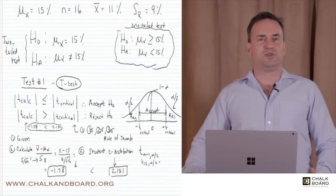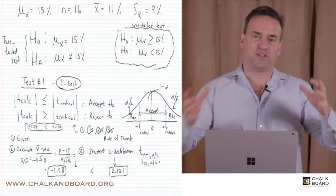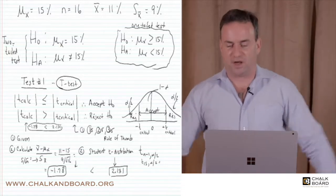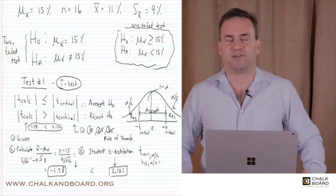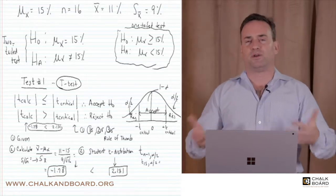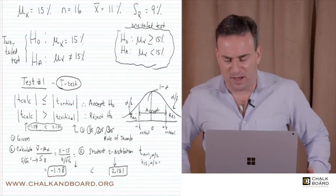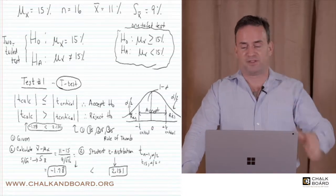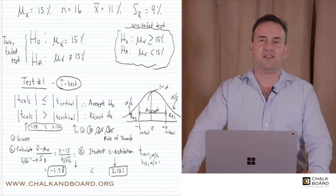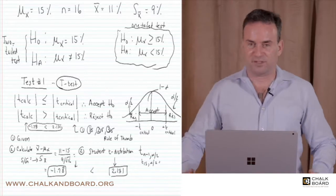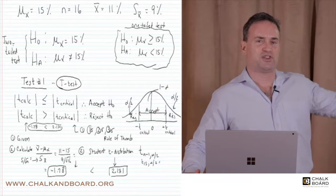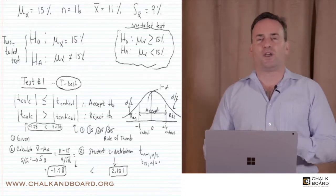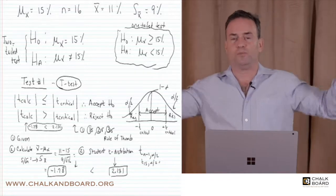We can also establish a one-tailed test. For the exam, if the null and alternate hypotheses are 'equal to' or 'not equal to,' that's a two-tailed test. A one-tailed hypothesis test would have a 'greater than or equal to' or 'less than or equal to' sign in either the null or alternate hypothesis. For example, the null could be population mean ≥ 15% and the alternate could be population mean < 15%. For level one and mostly level two, the focus is on the two-tailed hypothesis test where there's rejection in two potential areas.